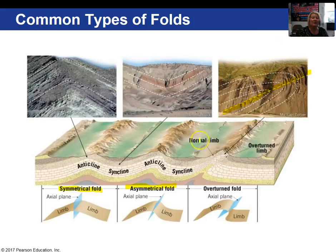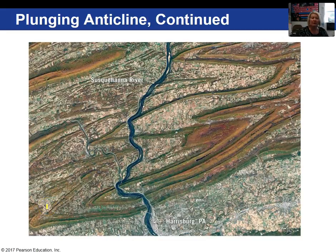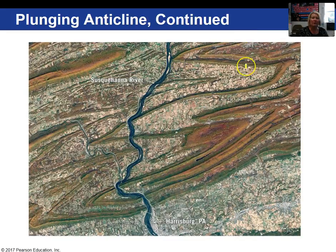Non-plunging folds give a straight-line pattern in map view. Plunging folds give a V- or U-shaped pattern in map view. If you see these V patterns, that tells you it's a plunging fold. I'm going to stop video 1 here for chapter 10 and continue discussing domes and basins in video 2. See you then.